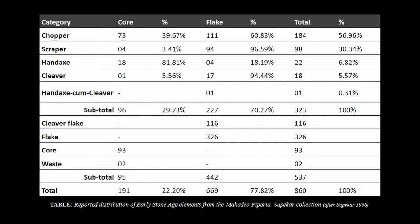Going back to Supekar's thesis, out of the 1,300 artefacts, 860 are what he assigned to the early Stone Age. This is because he separated quartzite materials from silicate materials and considered everything in quartzite to be early Stone Age and those in chert or other silicates as middle Stone Age — which is problematic. We have LCTs as well as other core tools, flake and core components.